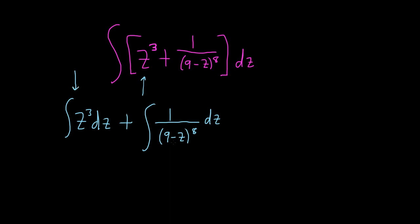So let's go ahead and make our u sub for the second integral. So typically when you make a u substitution, your inside piece is your u. So in this case, the inside piece is going to be 9 minus z. So u is equal to 9 minus z.